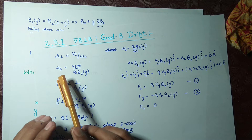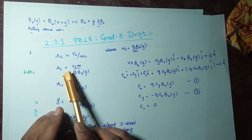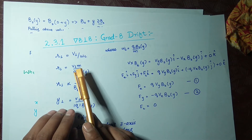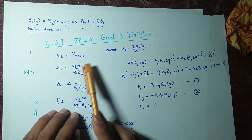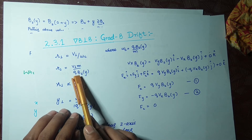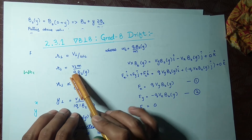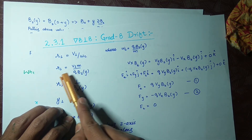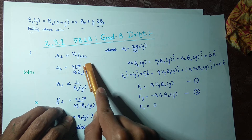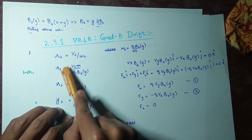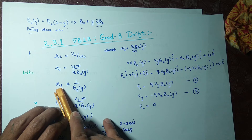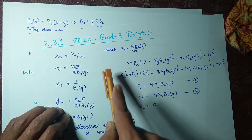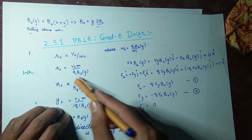So now r⊥ will be equal to v⊥ · m / (q · Bz(y)). Putting the value of ωc into this step, we get this equation. From this we conclude that if v⊥, m, and q are constant factors, then r is inversely proportional to Bz as a function of y.